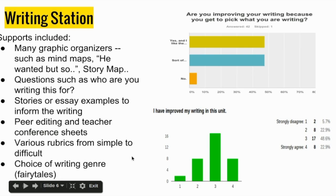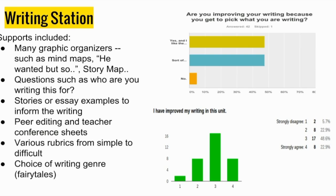Probably one of the most successful stations was the writing station — the reading station was great too, but my background is in writing so I totally loved it. The kids had so much fun picking what they wanted to write. They got to choose from three standards from the Common Core: informational, response to literature, or a persuasive piece, and I had all kinds of supports. Lots of kids really got into science fiction so I pulled out great science fiction writers to feed what they were reading. We had peer editing, lots of teacher conferencing, and a lot of rubrics. You can see from the survey results that a lot of kids feel they did improve their writing, and I think this was based on choice. One of the really cool things they were also able to do was write fairy tales, which I'm going to let Jen tell you about.